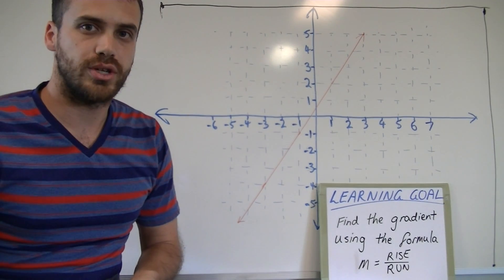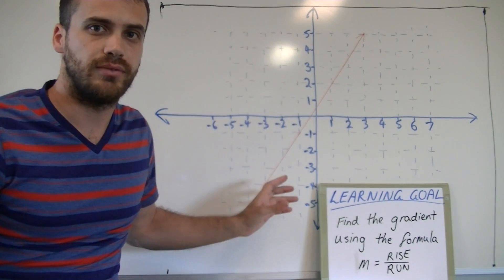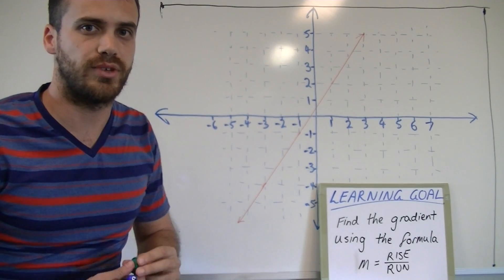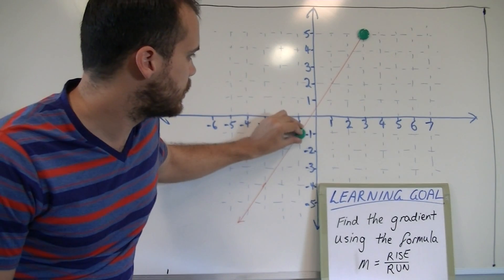Now, in order to use rise over run, you're going to need two points on that line. I'm going to find two points that are convenient. In a question, you might be given these points, or you might be able to locate them for yourself. I'm going to pick a point here and here.